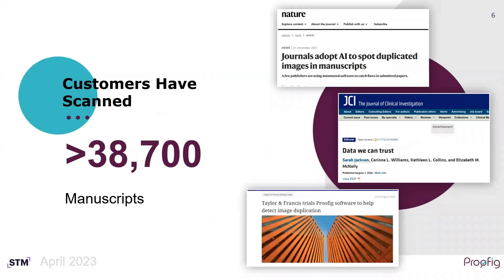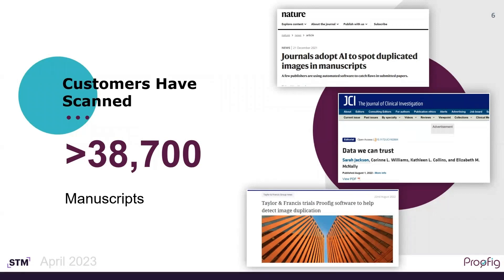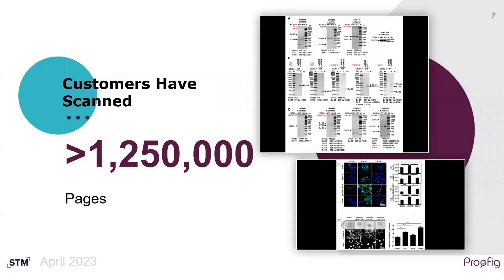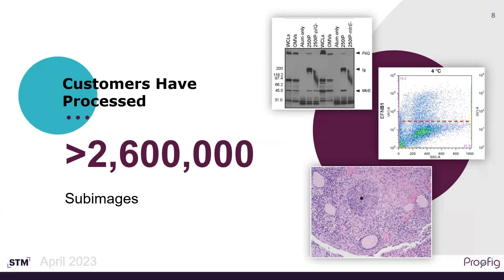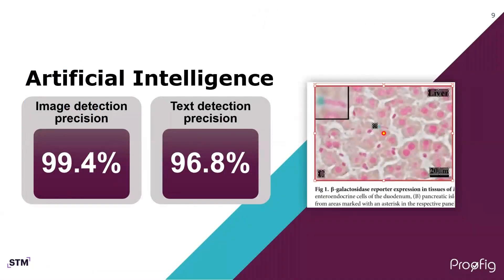So, what have we achieved so far with our partners? Since creating Proofig, customers have scanned more than 38,000 manuscripts using the AI software, covering over 1.25 million pages of content. Overall, Proofig has scanned over 2,600,000 sub-images. From scanning all these papers, our technology has achieved image detection precision of over 99% and text detection precision of over 96%.